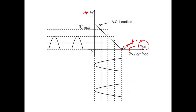Because of the operating point Q, if this is your input, the output will consist of half cycles only. The other half cycle you are not going to get — only the positive half cycles come through the transistor. The cycle which falls below the operating point is clipped. So at the output, the negative cycle is clipped and you get only positive half cycles from the active device.